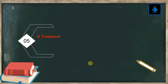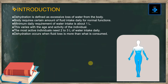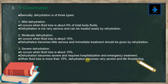Introduction: Dehydration is defined as excessive loss of water from the body. The body requires a certain amount of fluid intake daily for normal functions. The minimum daily requirement of water intake is about 1 liter. This varies with the age and activity of the individual. The most active individual needs 2 to 3 liters of water intake daily.